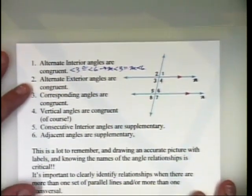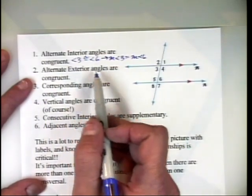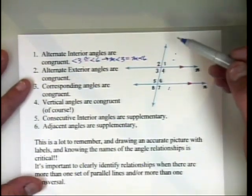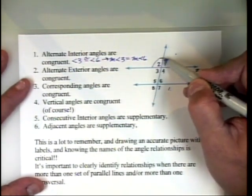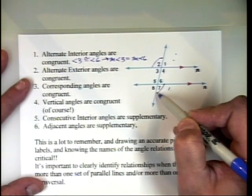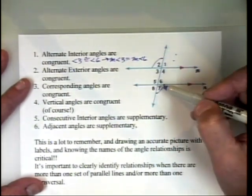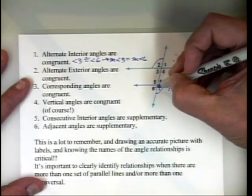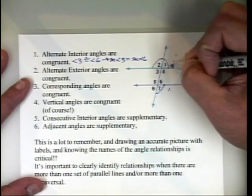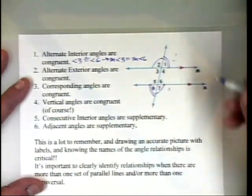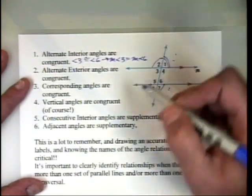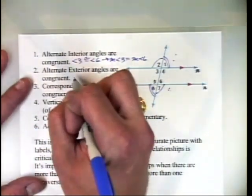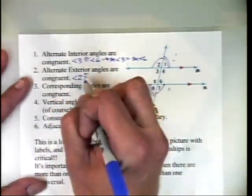Another VIP: alternate exterior angles are also congruent when parallel lines are cut by a transversal. Exterior means outside; alternate means on opposite sides. So angle 2 and angle 7 are congruent, and angle 1 and angle 8 are also congruent. We use arc notation — or double arc — to indicate congruent angles in a diagram.